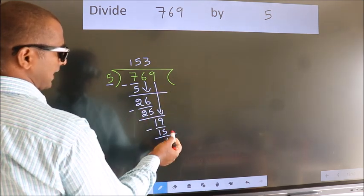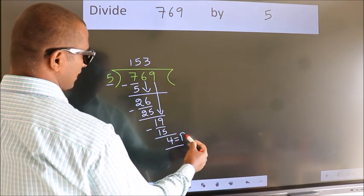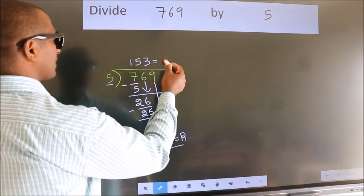No more numbers to bring it down. So we stop here. This is our remainder. This is our quotient.